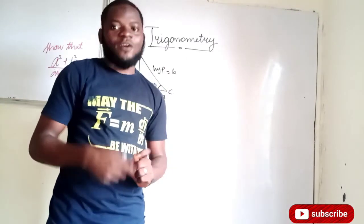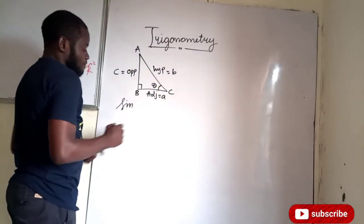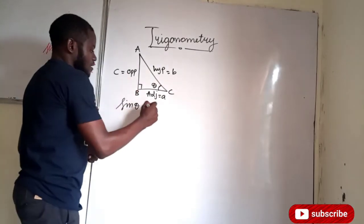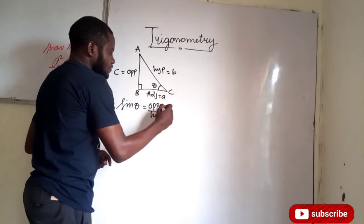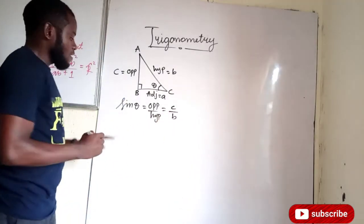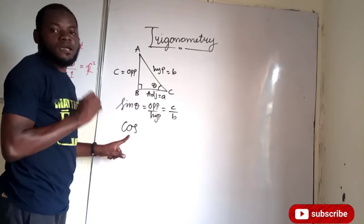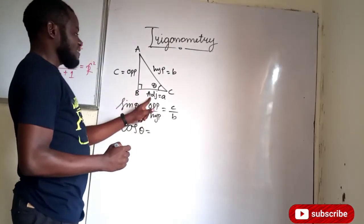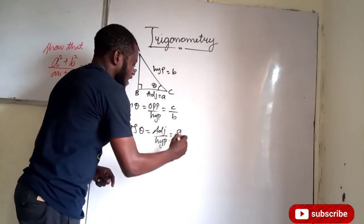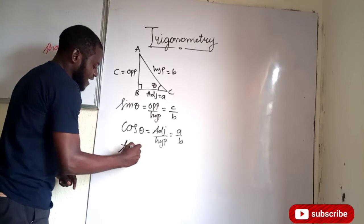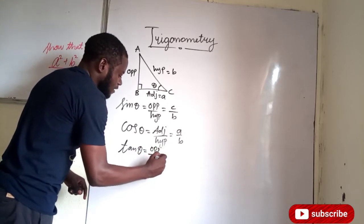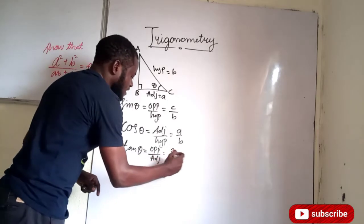Now let's look at the definitions. We are considering angle theta. Sine of theta — using SOH — is opposite over hypotenuse, so our opposite is C and our hypotenuse is B, giving us C over B. Cosine of theta — using CAH — is adjacent over hypotenuse, so our adjacent is A and our hypotenuse is B, giving us A over B. Tangent of theta — using TOA — is opposite over adjacent, so our opposite is C and our adjacent is A, giving us C over A.